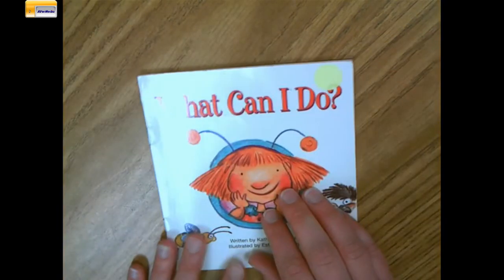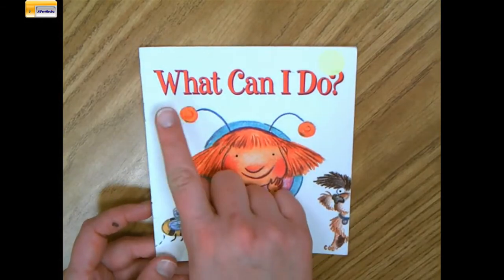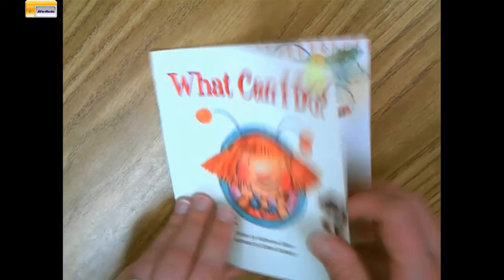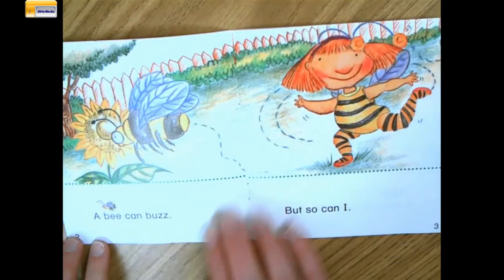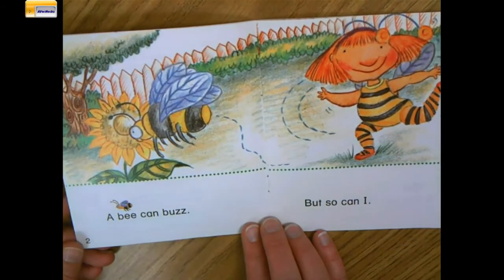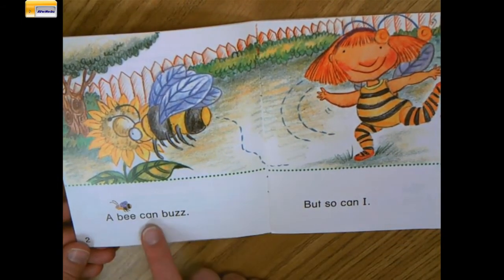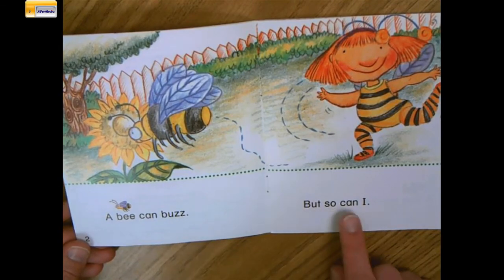This is another book I've been reading and you might have seen in your book baggies called What Can I Do? Which has two sentences. A bee can buzz, but so can I.